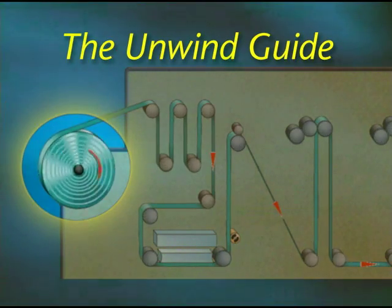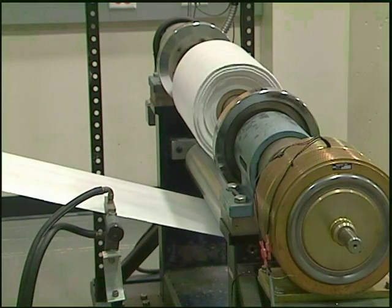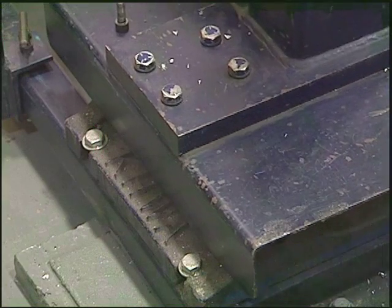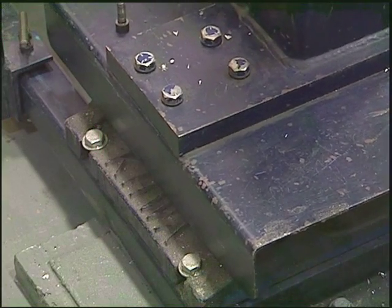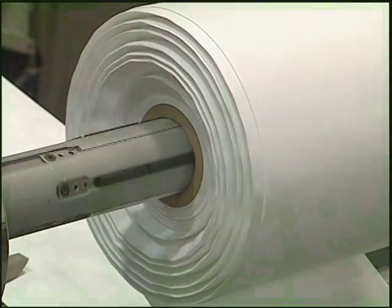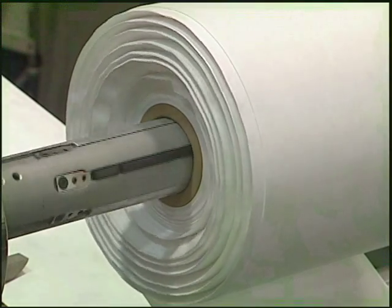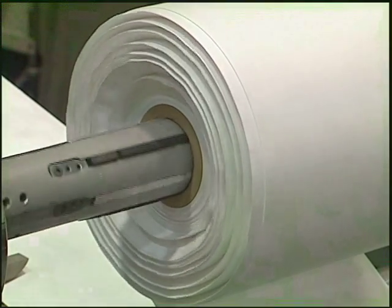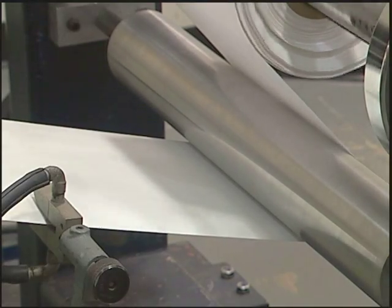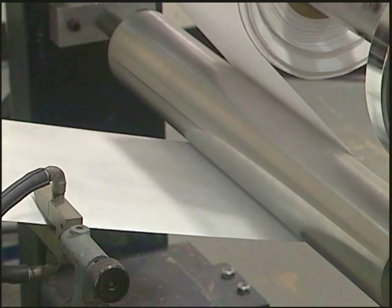The unwind guide. This guide actually moves the unwinding roll to shift the material to a fixed desired position with regard to the machine that the web is entering. One use of this guide is to compensate for inaccurate placement of the roll on the unwind shaft. It also compensates for variations of the material on the roll, such as when the material has telescoped or where there are splice shifts. An idler roller is typically attached to the unwind stand to eliminate web plane change as the web is removed from the unwind roll.